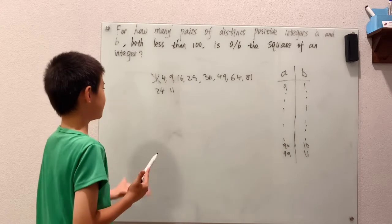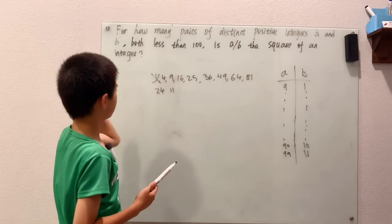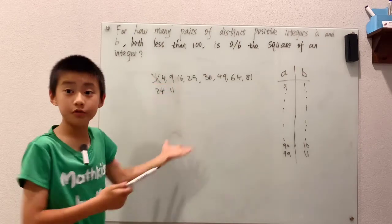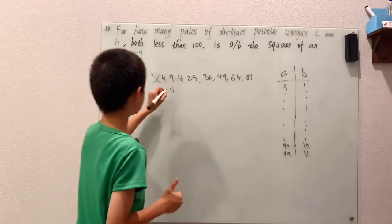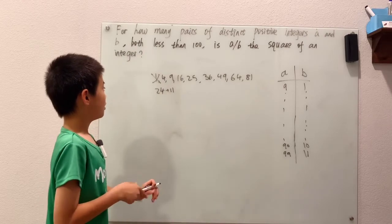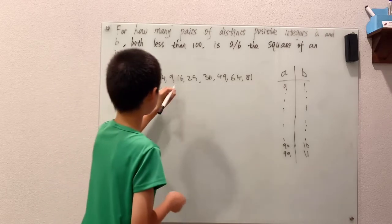Well then if there's 24 options for 4 and then 11 options for 9, if you want the outcome to be 9 then there's 11 choices to do that. You can just add these up, 24 plus 11. Well okay, that's kind of interesting.